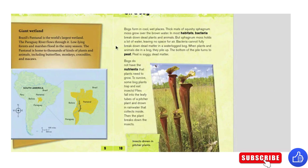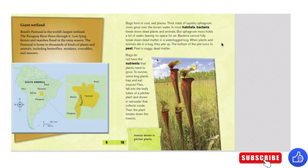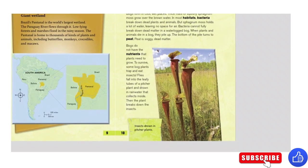On a bog. Bogs form in cool, wet places. Thick mats of squishy sphagnum moss grow over the brown water. In most habitats, bacteria break down dead plants and animals. But sphagnum moss holds a lot of water, leaving no space for air. Bacteria cannot fully break down dead matter in a waterlogged bog. When plants and animals die in a bog, they pile up, and the bottom of the pile turns to peat.